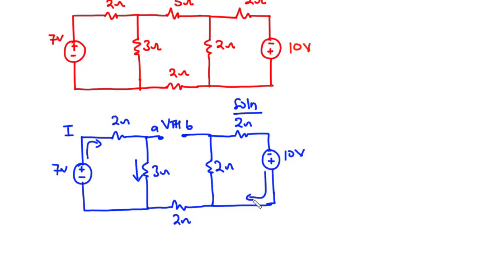Also considering this 10 volt source, using conventional flow of current, this current is going to move in the anti-clockwise direction through this 2 ohms resistor and this 2 ohms resistor. Let's call the current produced by this 10 volts to be I1. What this primarily means is that we have no current flowing through this resistor.